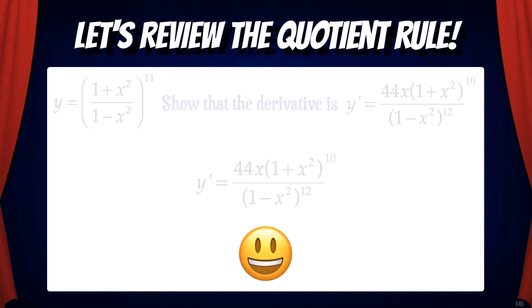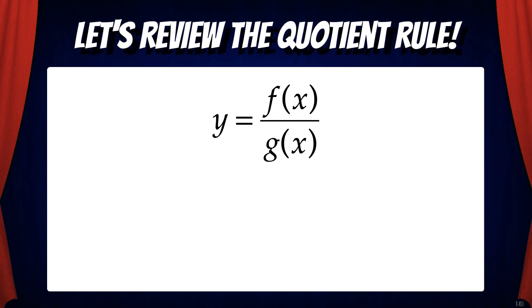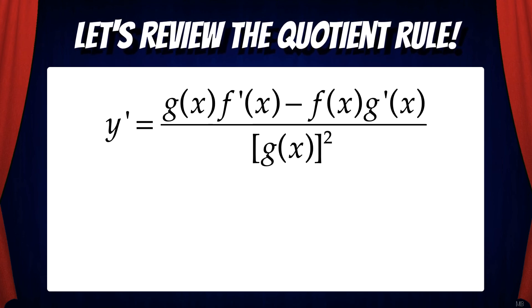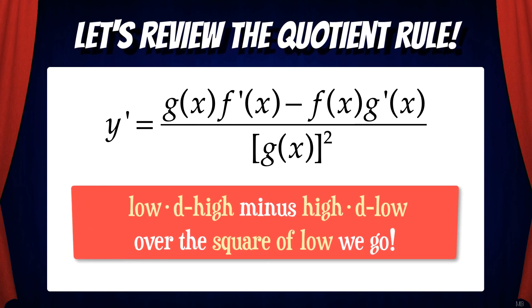So let's review. When you have a quotient of functions and you need the derivative, you must use the quotient rule, which is low d high minus high d low over the square of low we go. If you remember the rhyme, you'll always get the quotient rule correct.